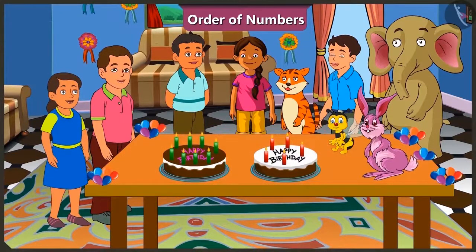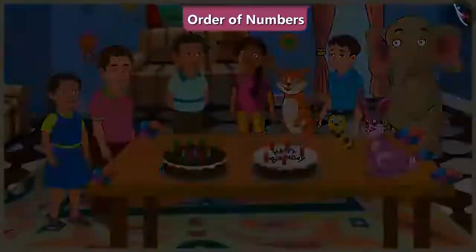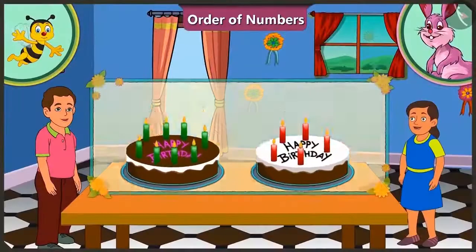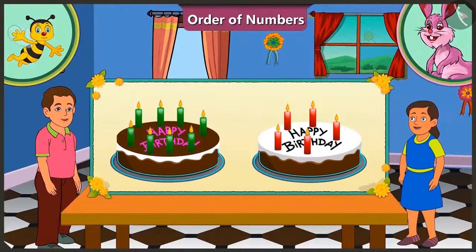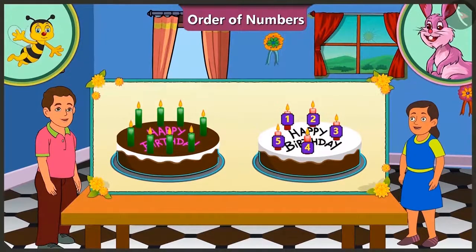Oh no Bunny, Bunty's cake has more candles on it. Come on, let's count them. See, one of Bubbly's candles and this one of Bunty's candles. This makes it 1, 2, 3, 4, 5 candles.